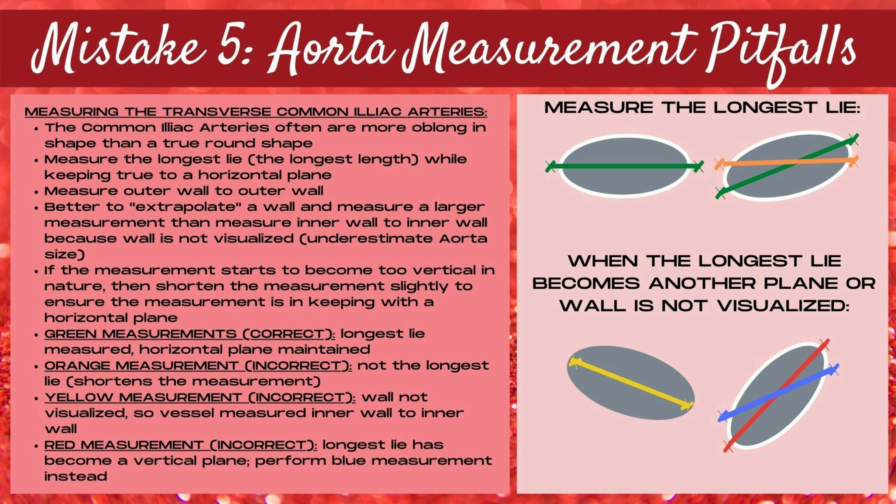Continuing with mistake number five when imaging the aorta — aorta measurement pitfalls — it's important to talk about the common iliac arteries. Since these often can be slightly oblong rather than a true round shape, they can be more challenging to measure. You want to measure the longest lie of the common iliac arteries while keeping to a horizontal plane, measuring outer wall to outer wall. It's better to extrapolate a wall and take a slightly larger measurement than to measure inner wall to inner wall when the wall is not visualized, as this underestimates the aorta size.